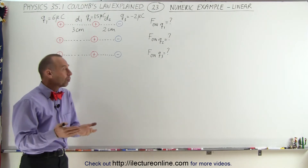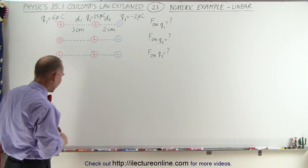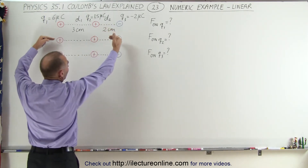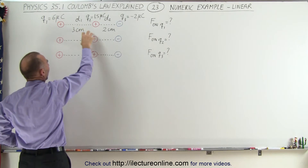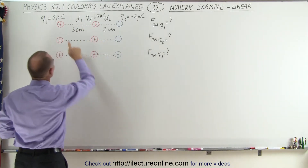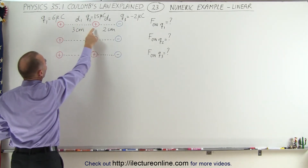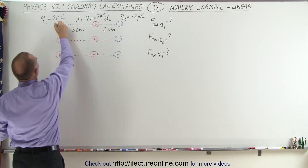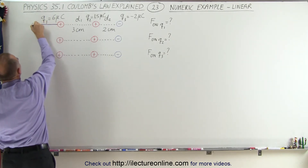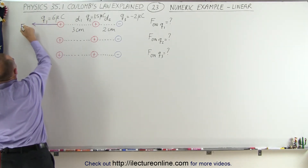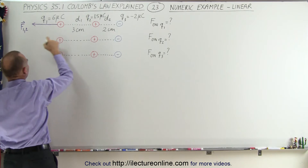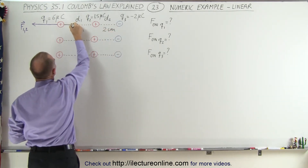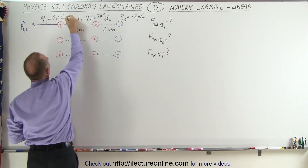To do that, we're first going to draw the vectors representing those forces. Starting with the first charge, we're going to have a force of repulsion because of the effect of Q2, which means we're going to feel a force in this direction — this would be the force between 1 and 2. And then there'll be a force of attraction between Q1 and Q3 in this direction, so this would be the force between 1 and 3.